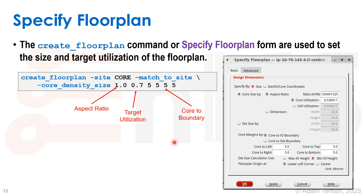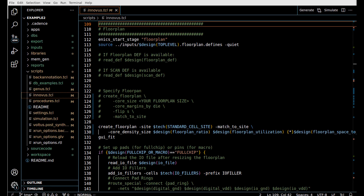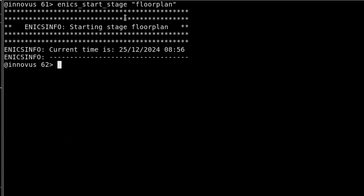The floor plan size is something we'll either be given from a higher level — where someone tells us what it should be — or we estimate it ourselves based on a target utilization and the estimated size of our standard cells from synthesis. That basically finishes our startup and setup stage, and now we move to the floor planning stage.